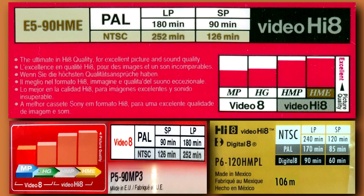In the 1980s, the 8mm consortium created a label to indicate tape formulation and recording time. The single letter prefix identifies tape formulation: P for metal particle, E for metal evaporated.